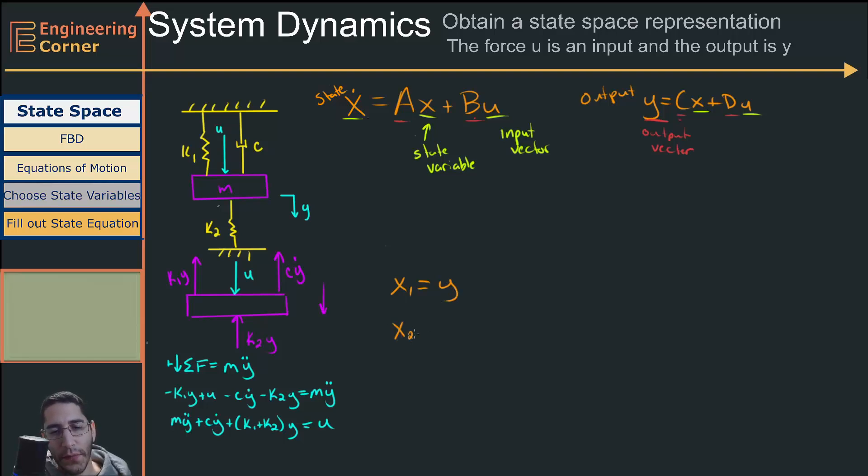Then x2 is going to equal y dot. Now if we take the derivative of x1, we get x1 dot equals y dot. And if we do x2 dot, that's going to equal y double dot. So now we can represent this with a first order equation by substituting these values in.